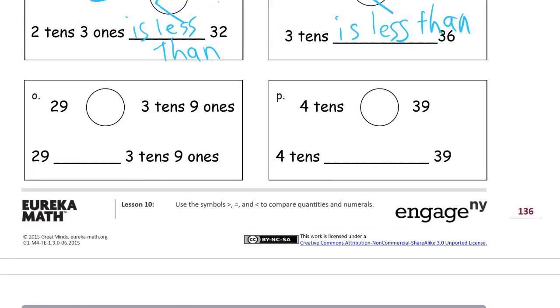Now we're down to the last 2. 29 and here we have 3 tens 9 ones. If you're trying to make a place value box out of it, 3, 9, that's 39. 29 is less than 39. The 39 is getting eaten by that alligator. If the 39 is more, the 29 is less. So 29 is less than 3 tens 9 ones.